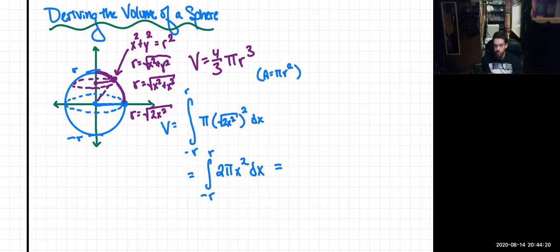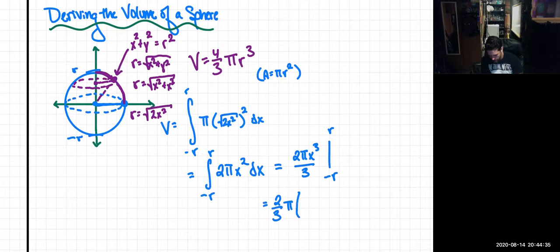So because it's with respect to x, we're just going to use the power rule of integration. So this will become 2 pi x cubed over 3, integrated from negative r to r. And that's just going to be equal to 2/3 pi times r cubed minus negative r cubed.